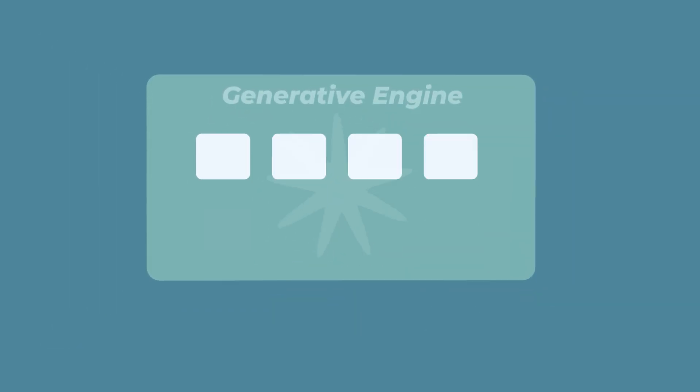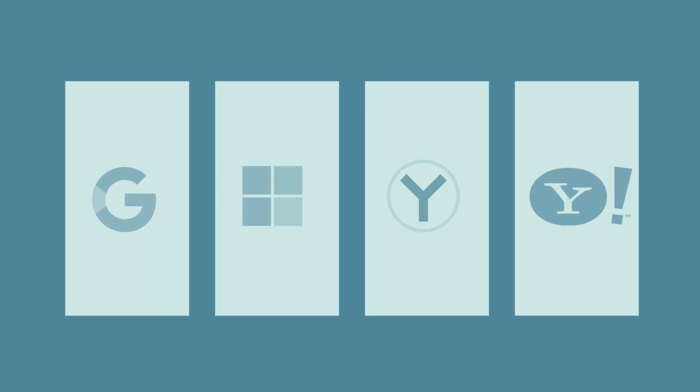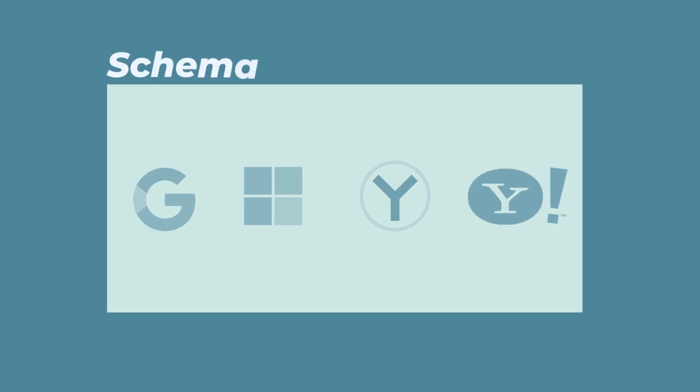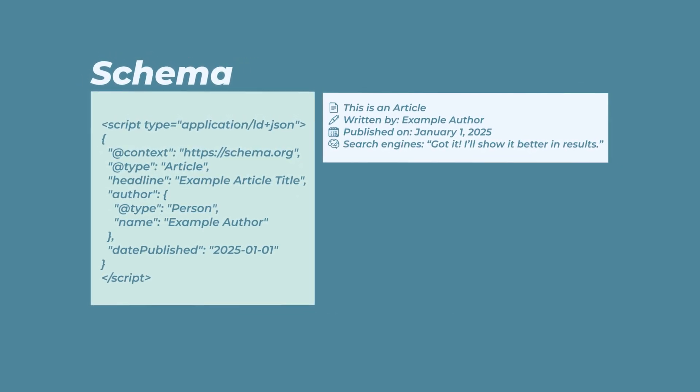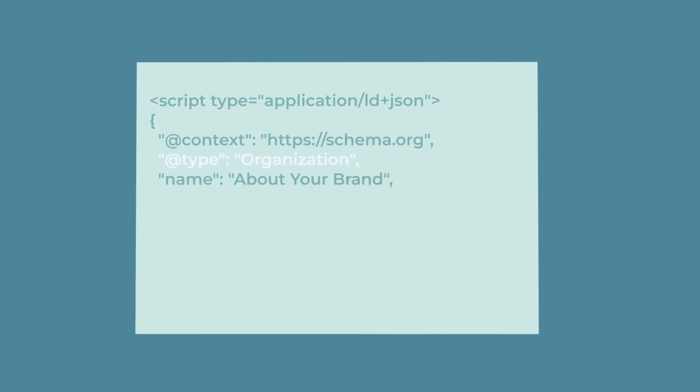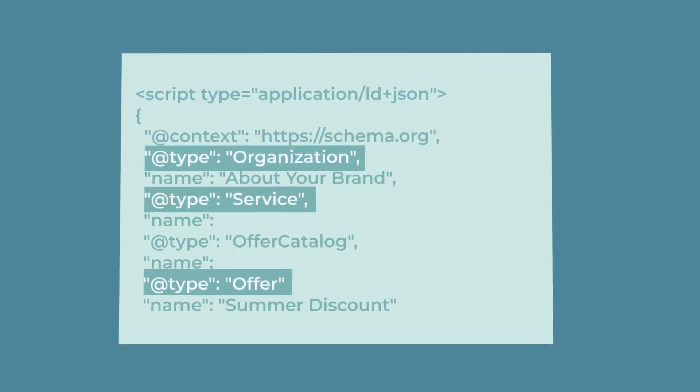Once you're a verified entity, the next step is to feed the AI structured data, or schema. Schema was a code originally developed by all the major search engines — Google, Microsoft, Yandex — they all came together to build a code. A piece of structured data is given directly to the search engines, and it's the same with generative engines. This structured data can be fed to the engines so easily in AI, and it's an amazing way to give them direct data about your brand, your services, and offerings.